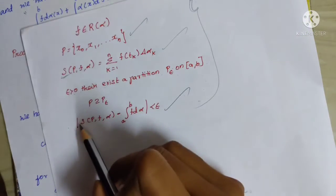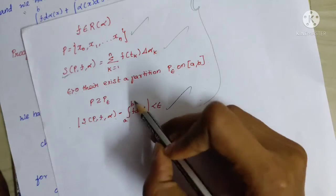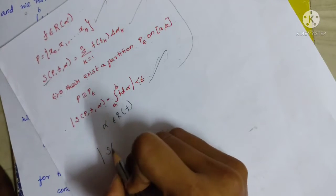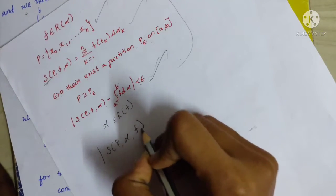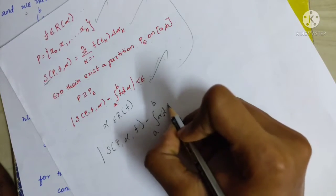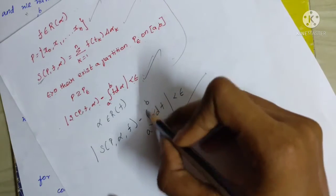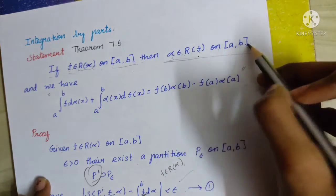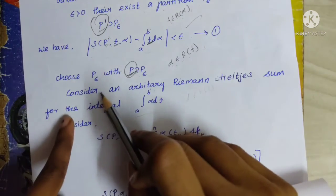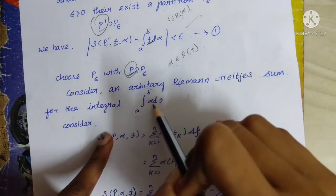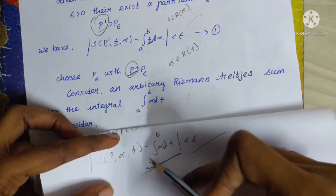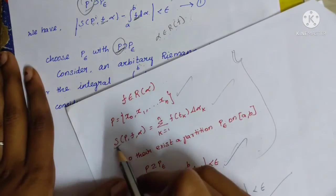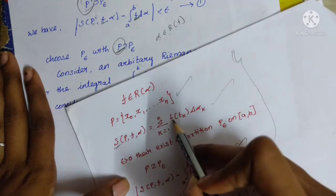Since f belongs to R(alpha), we have S(P, f, alpha) minus the integral from a to b of f d(alpha) less than epsilon. Now, S(P, f, alpha) is equal to the summation from k=1 to n of f(t_k) times delta(alpha_k). Here we can also write S(P, alpha, f).